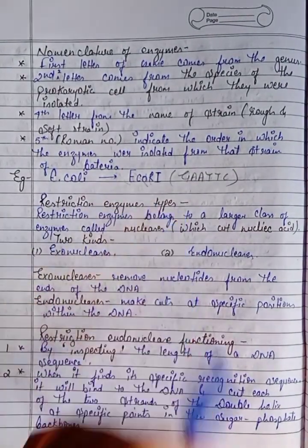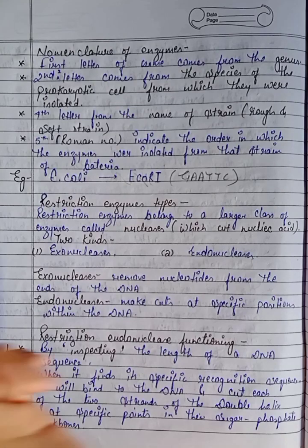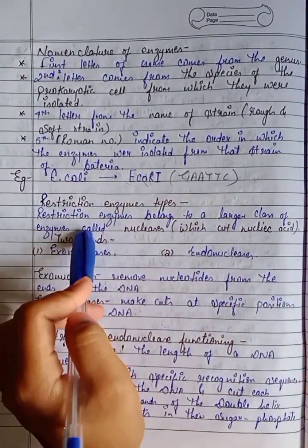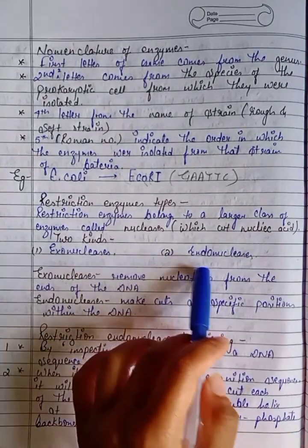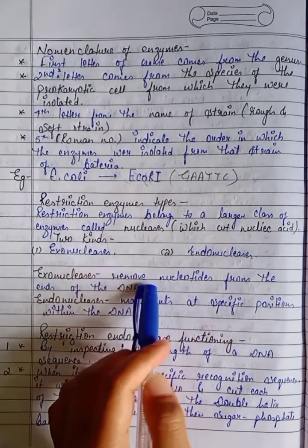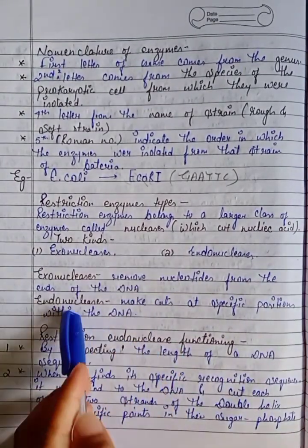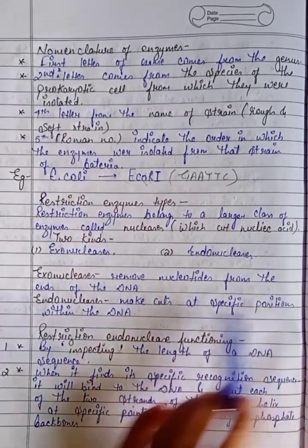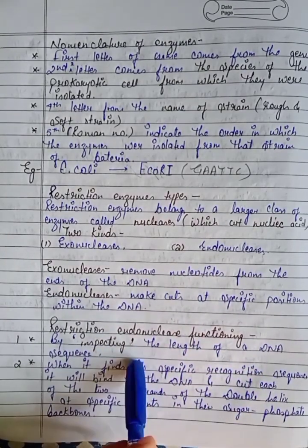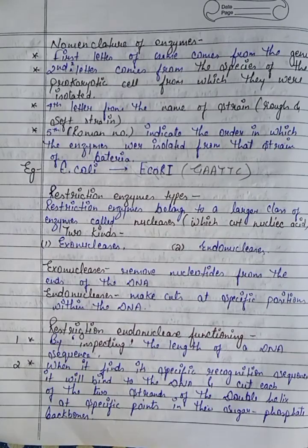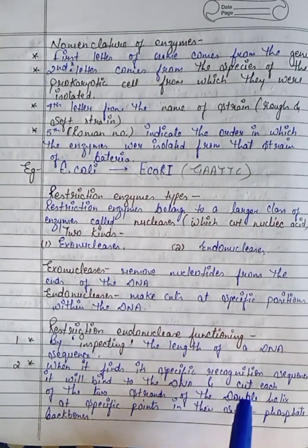Restriction enzymes belong to a large class of enzymes called nucleases, which cut nucleic acids. There are two types: exonucleases and endonucleases. Endonucleases find a specific recognition sequence, bind to the DNA, and cut each of the two strands of the double helix at a specific point in their sugar-phosphate backbone.